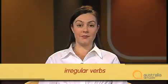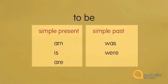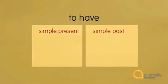They're irregular verbs. Let's compare the three forms of these irregular verbs. From the infinitive form of the verb 'to be', we can form the simple present forms 'am', 'is', and 'are'. And we can also make the simple past forms 'was' or 'were'. Notice that the verb 'to be' is the only verb in English that has two past tense forms — all others just have one. For the verb 'to have', the simple present form is 'has' or 'have', and the simple past form is 'had'. When you learn new verbs, it's important to learn them with all their different forms.